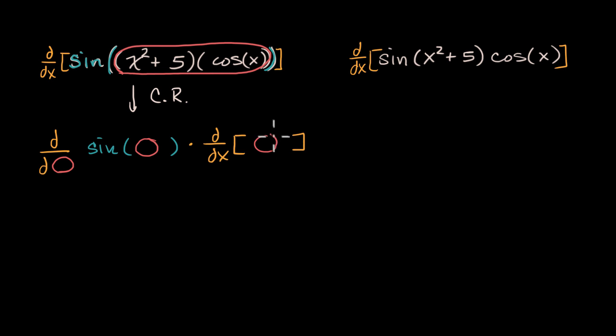Sine of that something, not even thinking about what that something is just yet, times the derivative with respect to x of that something. This is just an application of the chain rule. No matter what was here in this pink colored circle, it might have been something with square roots and logarithms and whatever else. As long as it's been contained within the sine, I would move to this step.